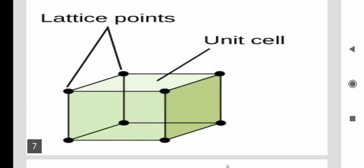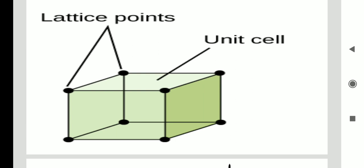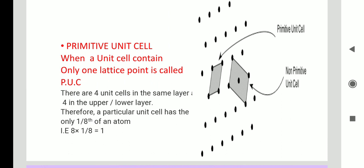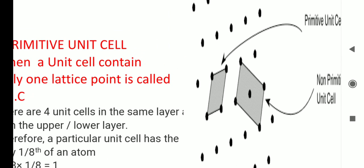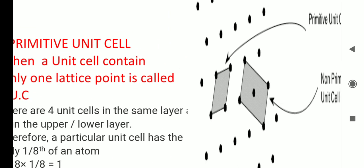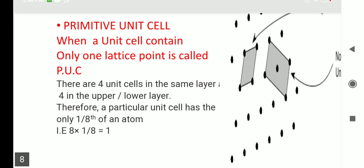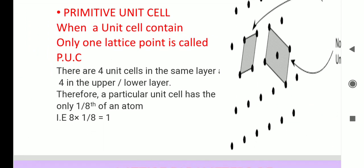Lattice points are the corners of atoms or points in a crystal structure. Because of lattice points, the smallest block — the unit cell — is formed. A unit cell is of two types: primitive and non-primitive. The first type is primitive, and the second type, which has an extra point, is non-primitive. In a primitive unit cell, only one atom exists; in a non-primitive unit cell, more than one atom exists.